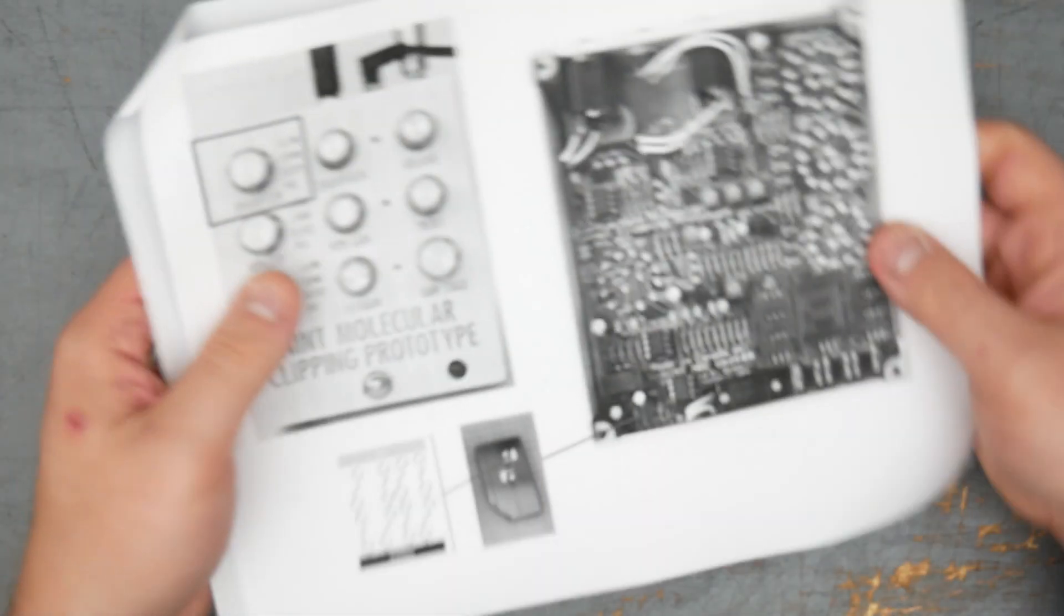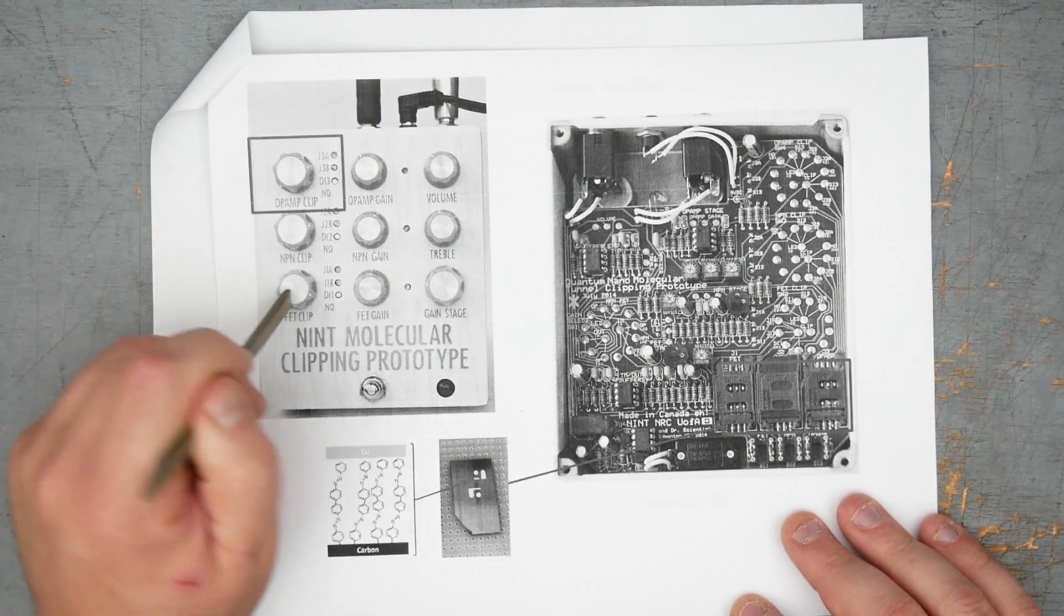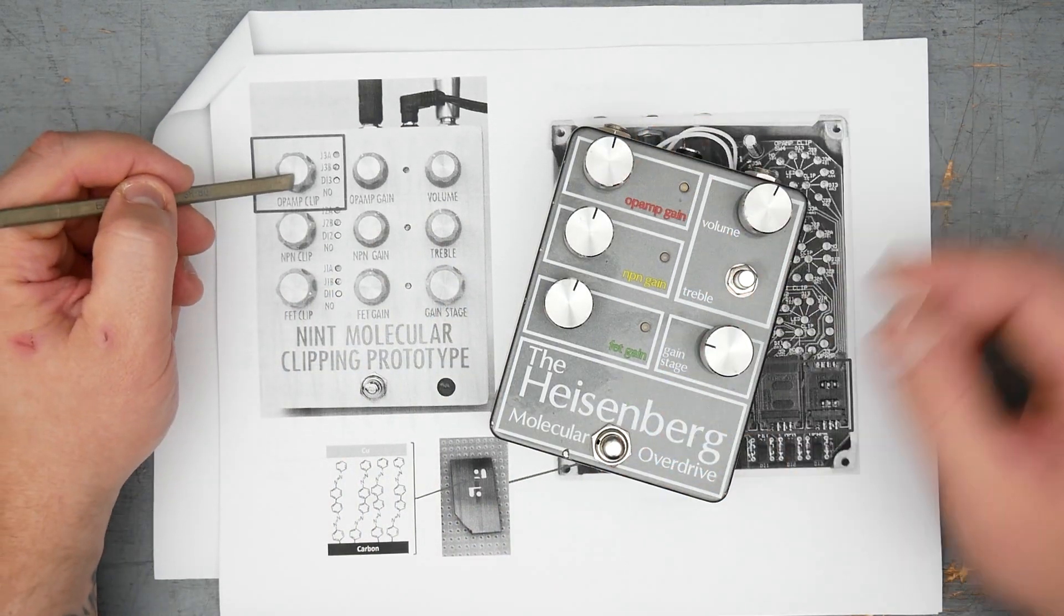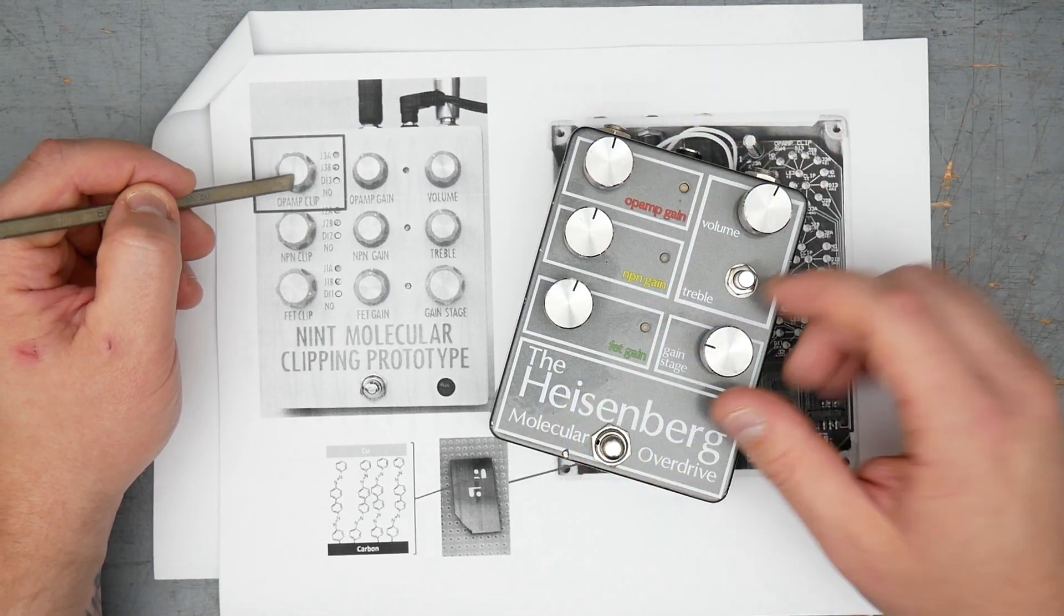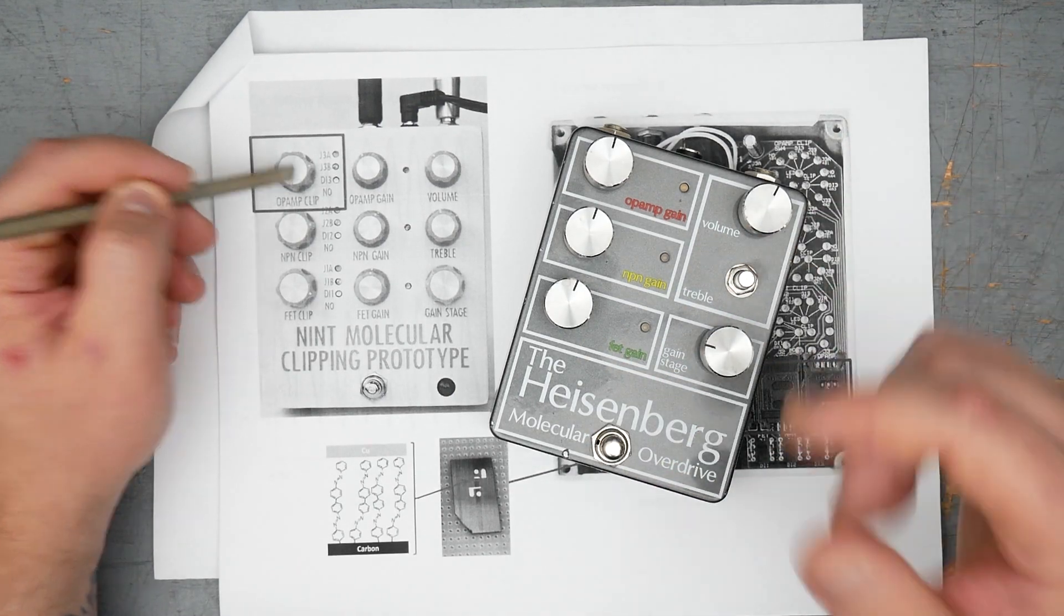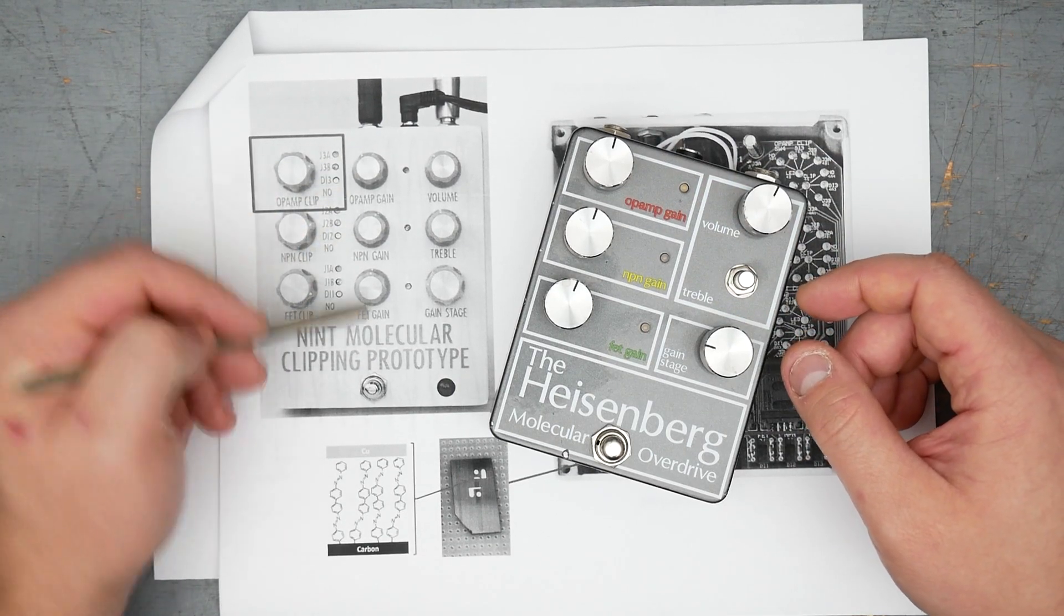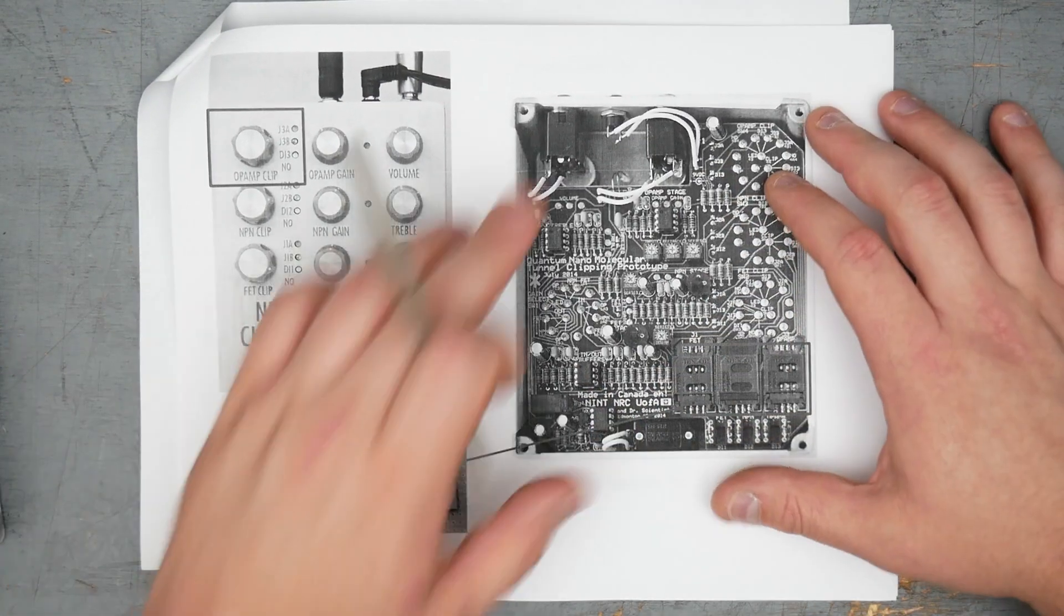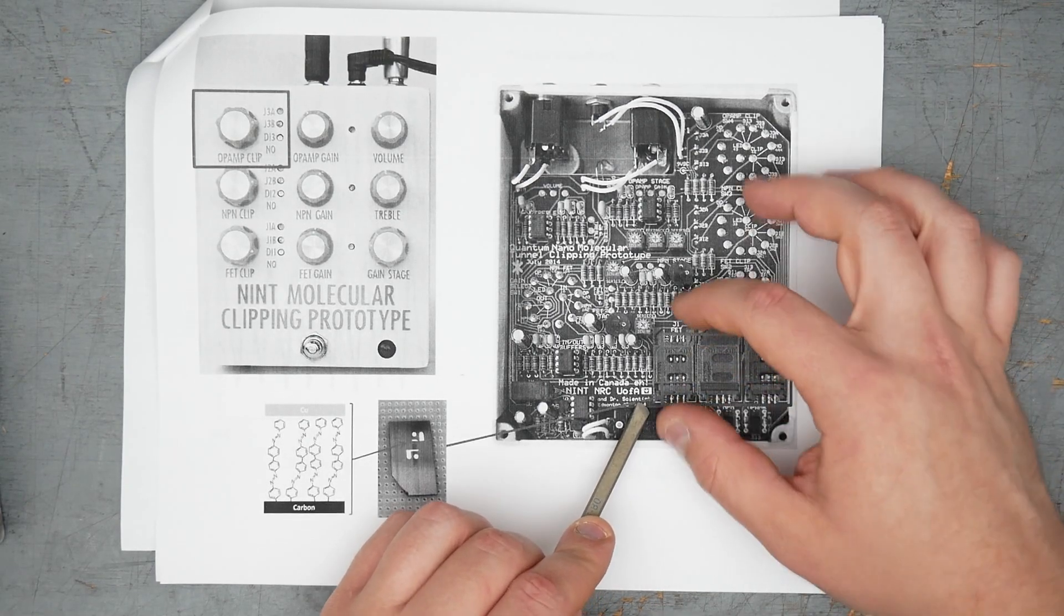So here is this build, this is the prototype, and what's unique here is that you have unique clipping diode options for each of the three stages. So instead of just having a single gain stage selection, you can choose between different clipping options for each stage, and then control the gain of each independently.